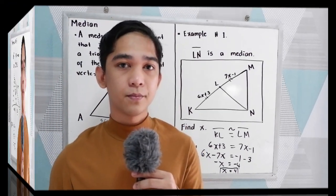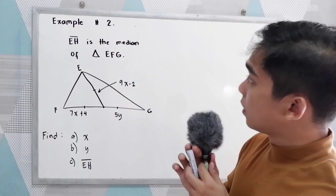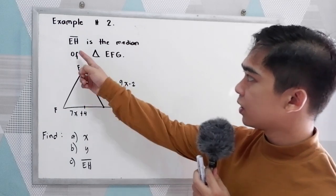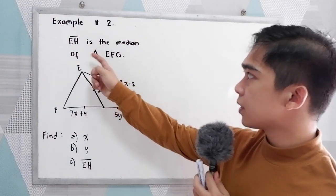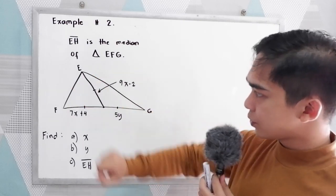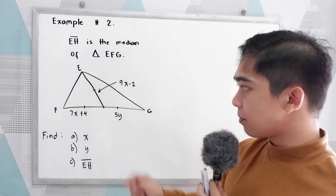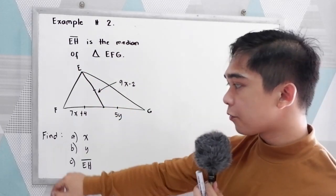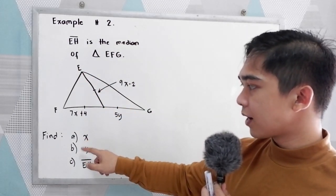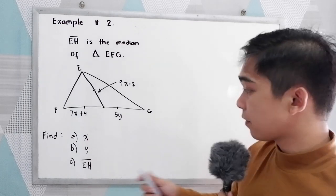Now let's have our example number 2. Segment EH is the median of triangle EFG. So our illustration, triangle EFG. Then EH is the median. We're going to find the value of X, Y, and the measure of segment EH.